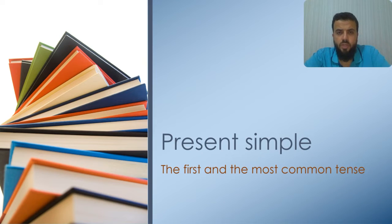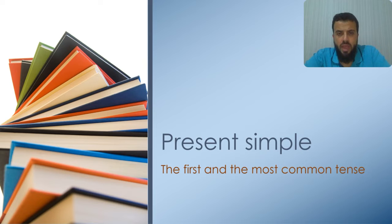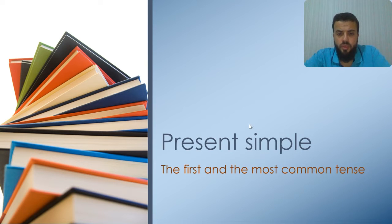Hello, and welcome to our first grammar lesson. Today, we're going to talk about present simple, the first and the most common tense. In English, we have 12 tenses. The first one is present simple. Simple is the opposite of complex or complicated. So, let's get started.